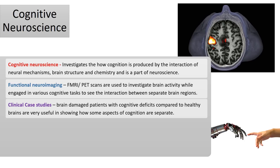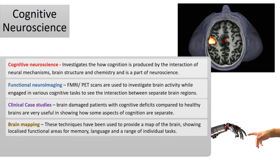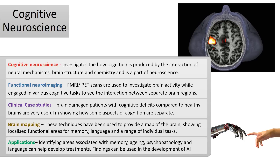By using these techniques we can create a map of the brain showing localised function for areas such as memory, language, and a range of individual tasks. We can use ideas from cognitive neuroscience when we look at memory, aging, and psychopathologies like OCD, dementia, depression and language formation — and from this knowledge develop treatments to help people who are suffering. The findings from cognitive neuroscience are also used in the development of artificial minds, such as AI, including computers that can recognise images and produce language.